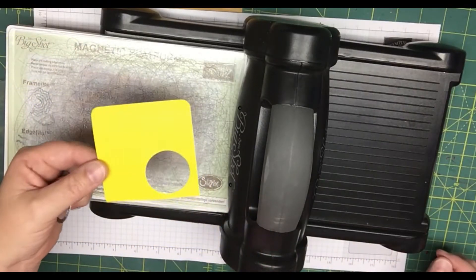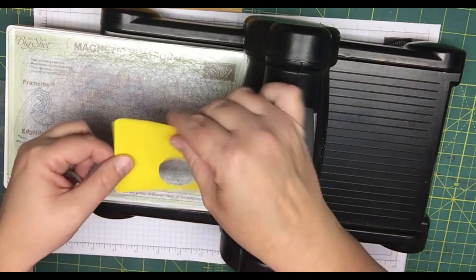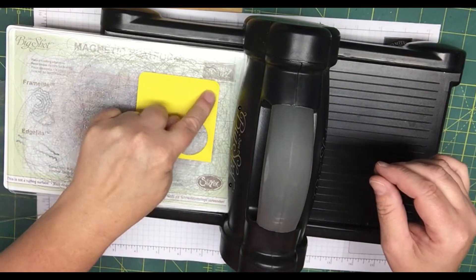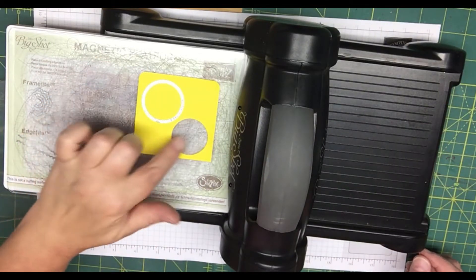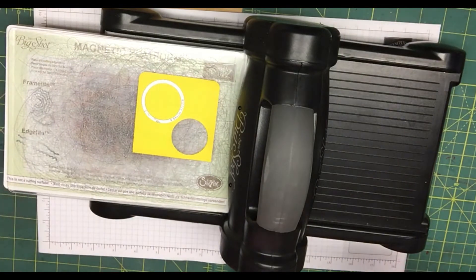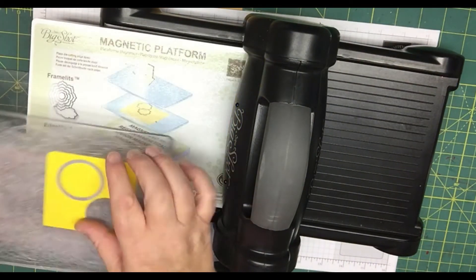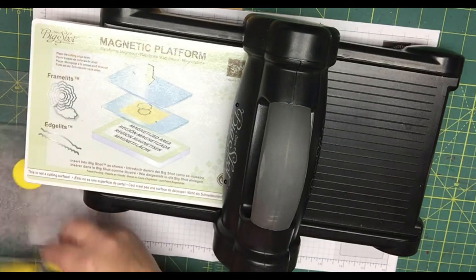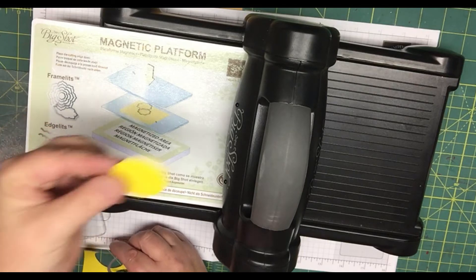So the first thing you're going to do is take your sticky note. I already cut one out earlier, but you're just going to lay it down sticky side down and again your sticky note should be a full sheet of stickiness. We're just going to cut this out. So I just use the magnetic platform to cut this out. And then you're just going to take the circle and we're going to use that on our card.